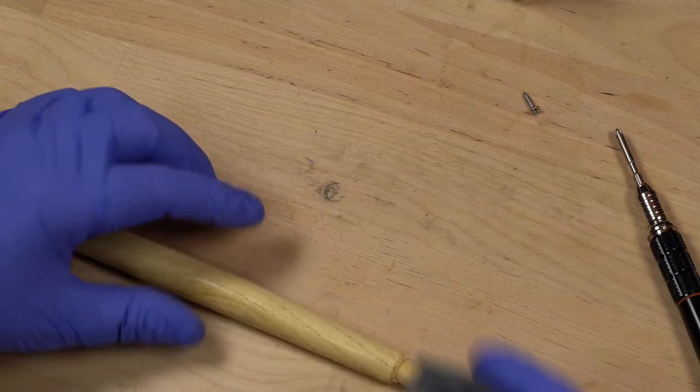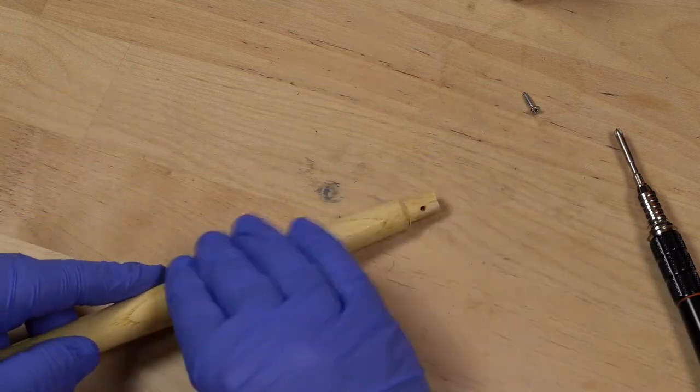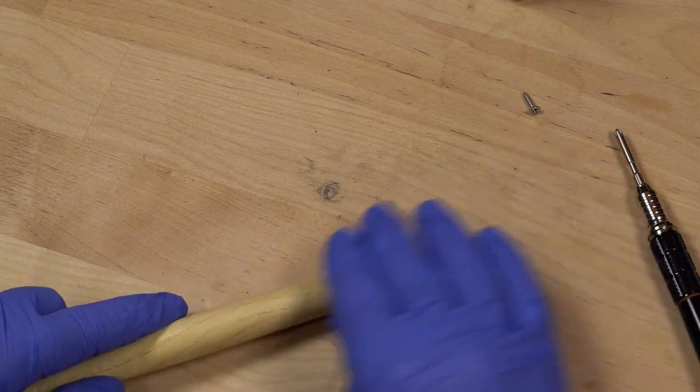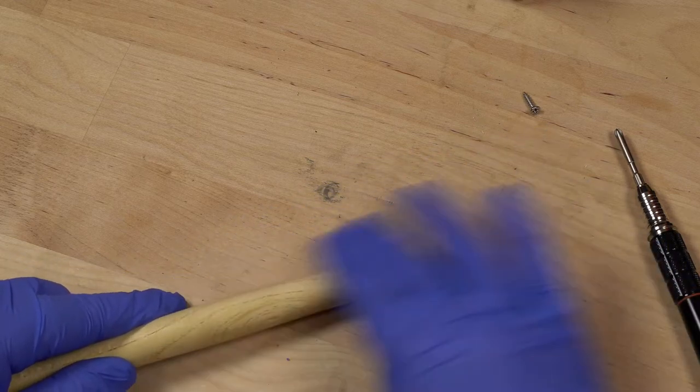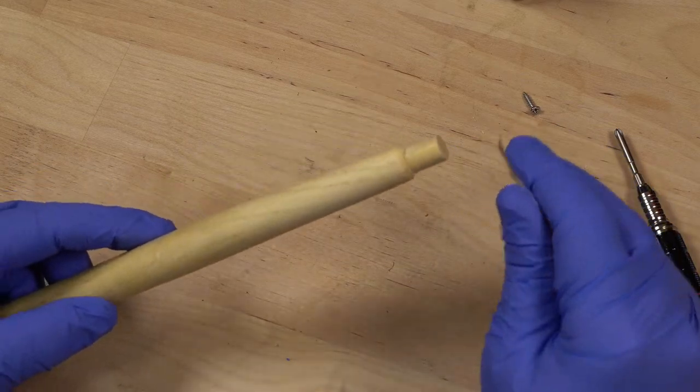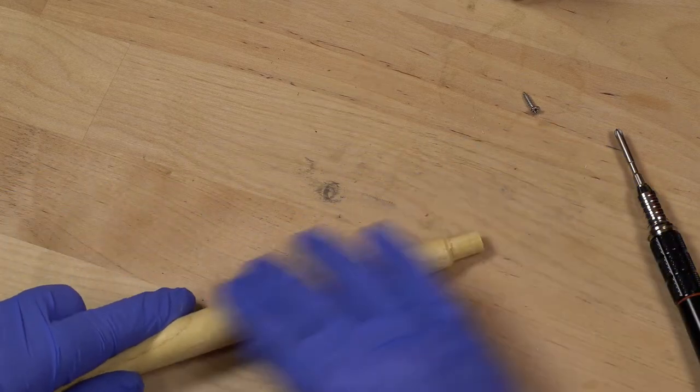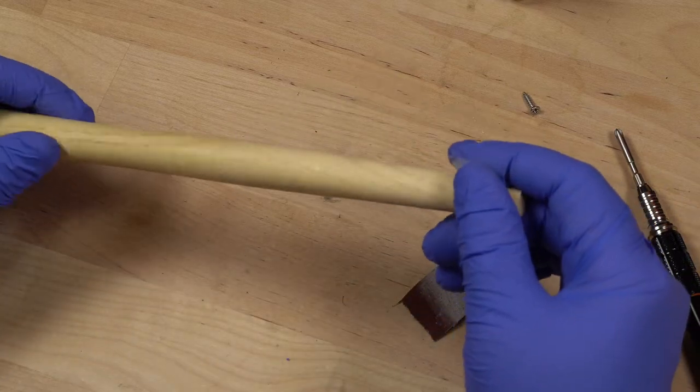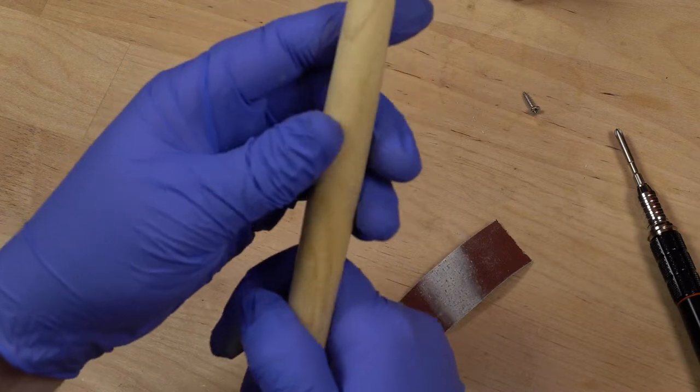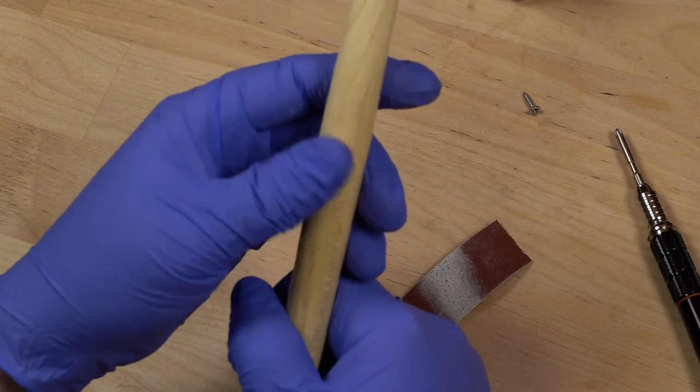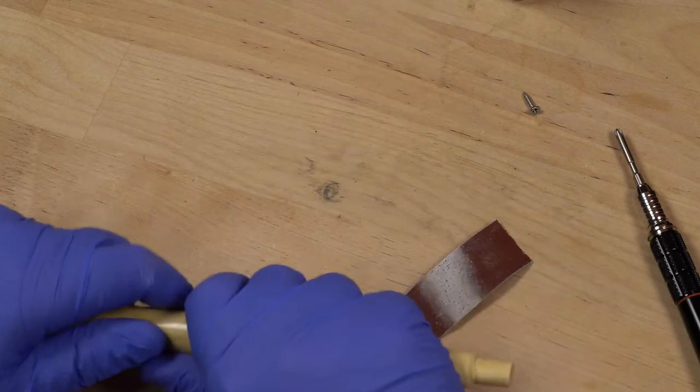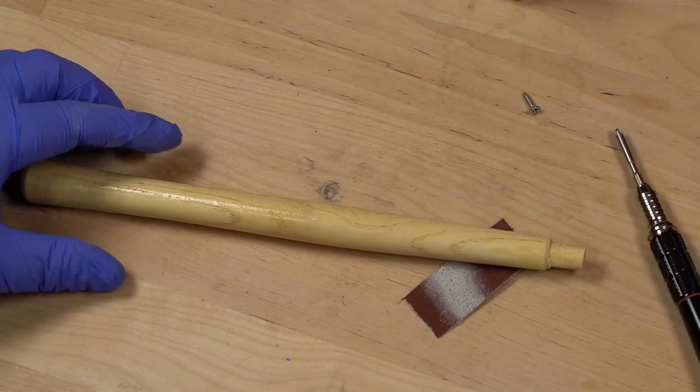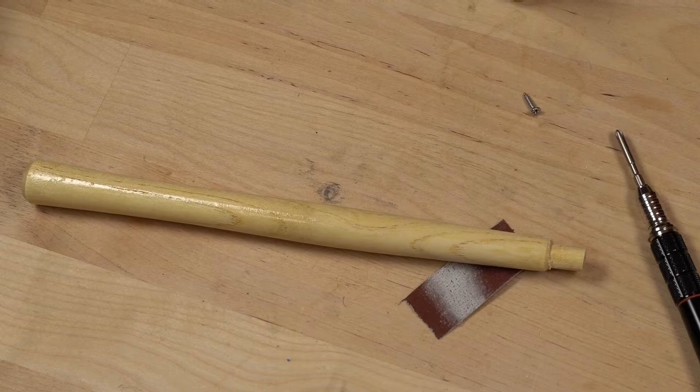All right. Let's clean this up. I've got some 240 grit sandpaper here. I want to get rid of the finish. Is that going to work? I might need a little bit more grit. All right. Well you know how to sand this stuff off. I'll let you figure that out and do it on your own if you're going to do it. It looks like that's coming off with the 240. So I'll pause the video and pick it back up where I'm done sanding this hammer handle.